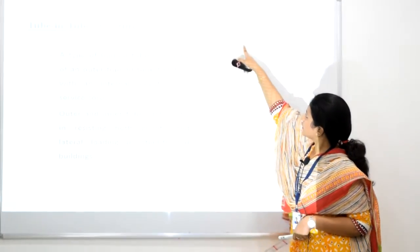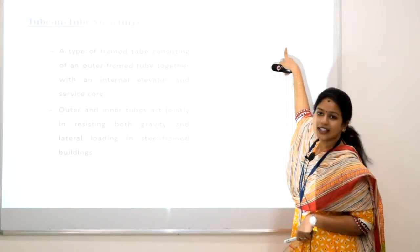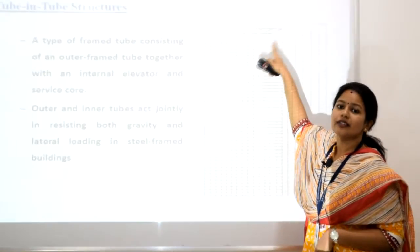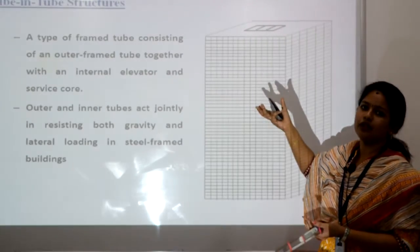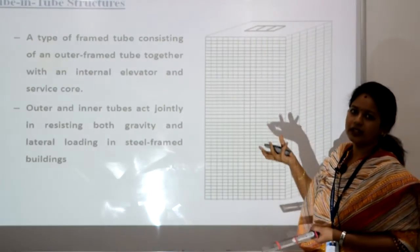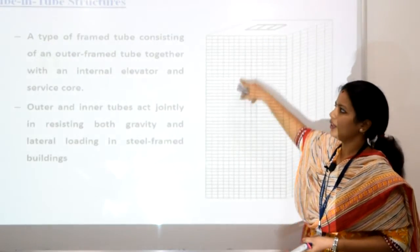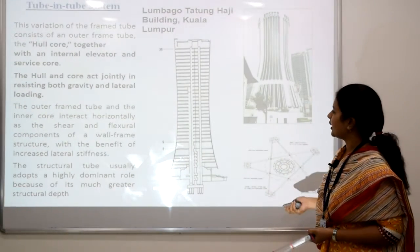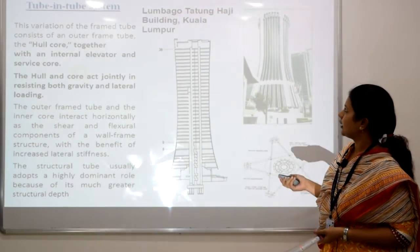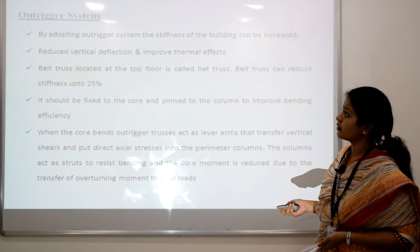Another system is the tube-in-tube system. You can see here a tube inside a very big tube — we call the outer one the hull and the inner one the core. That is why this type of structure is also called a hull-core system. The gravity load gets transmitted to the hull and then to the core. That is why we call this a tube-in-tube or hull-core system. One example is the Haji Building in Kuala Lumpur.